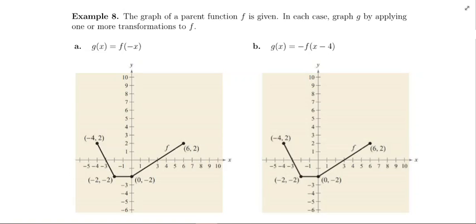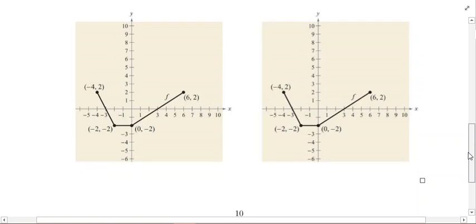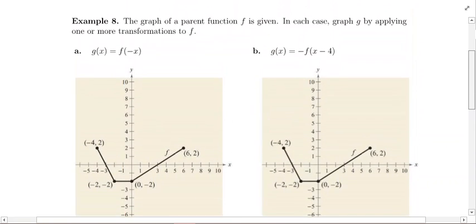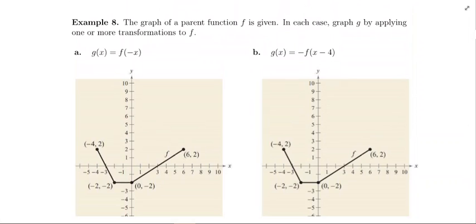Example 8. The graph of a parent function f is given. In each case, graph g by applying one or more transformations to f. If you give this page a quick scan, you will see that there are four different graphs here, each with the same parent function. The parent function is the basic function that you've been given that you need to apply the transformations to. In each case we'll be using the same parent function, just applying a different transformation. Let's take a look at part a.